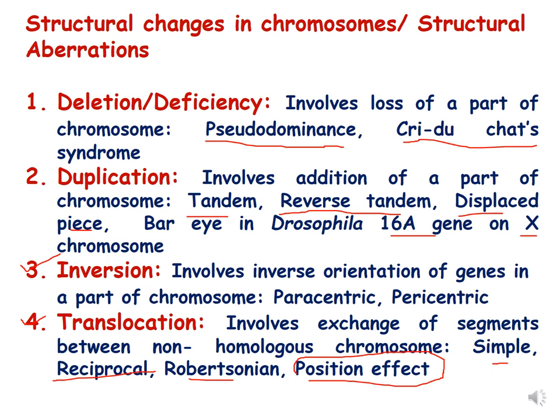The third kind of structural aberration is inversion, which involves inverse orientation of genes in a part of chromosome. Inversion is of two kinds: paracentric and pericentric. Paracentric inversion does not include the centromere, while pericentric inversion includes the centromere.